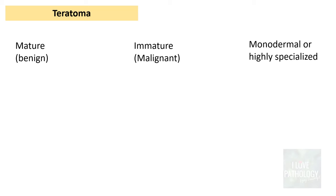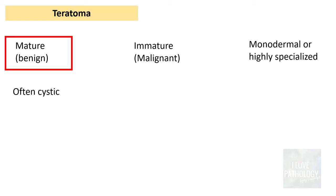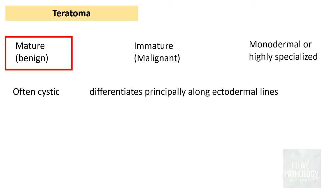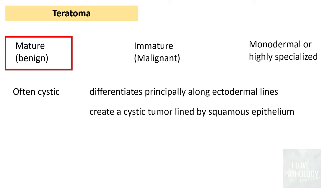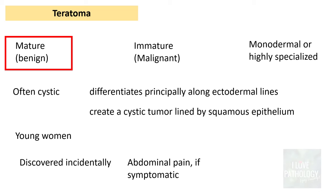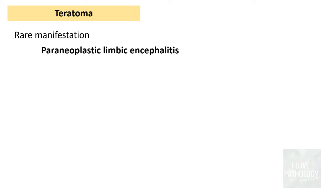Mature teratomas are often cystic, and they differentiate principally along ectodermal lines. That's why they create a cystic tumour lined by squamous epithelium, which is an ectodermal derivative. These tumours are found most often in young women. They are often discovered incidentally, and if symptomatic, patients will have abdominal pain. One rare manifestation of benign teratoma is paraneoplastic limbic encephalitis.